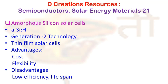With first-generation solar cells — the silicon wafer-based technology — the main disadvantage is cost. With amorphous silicon, you are able to circumvent this cost problem.